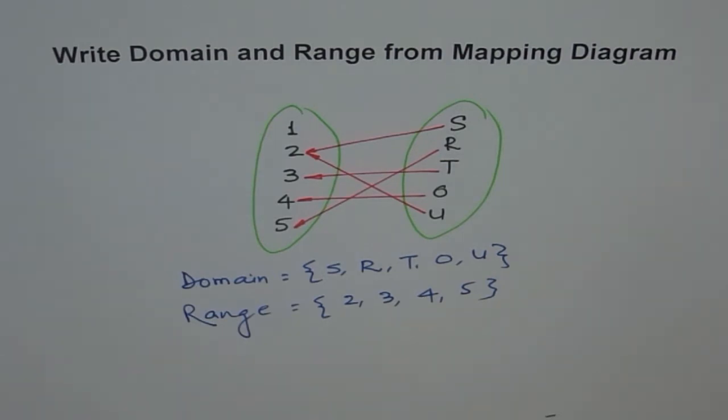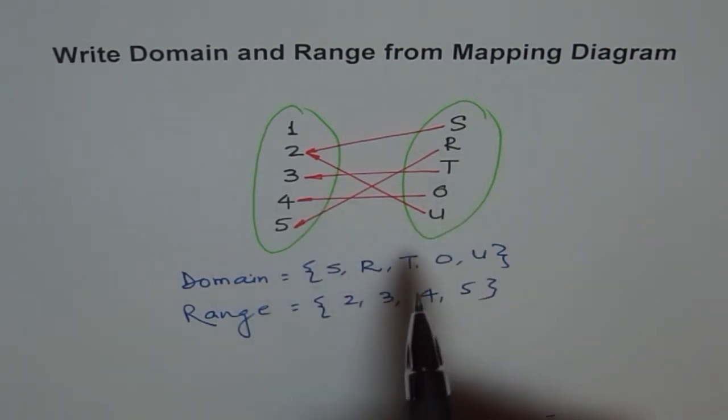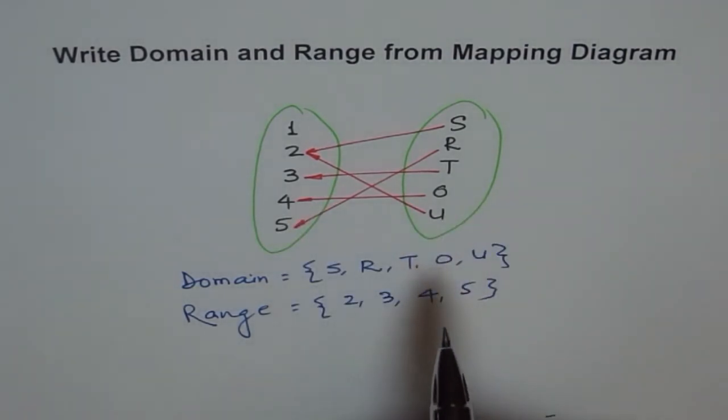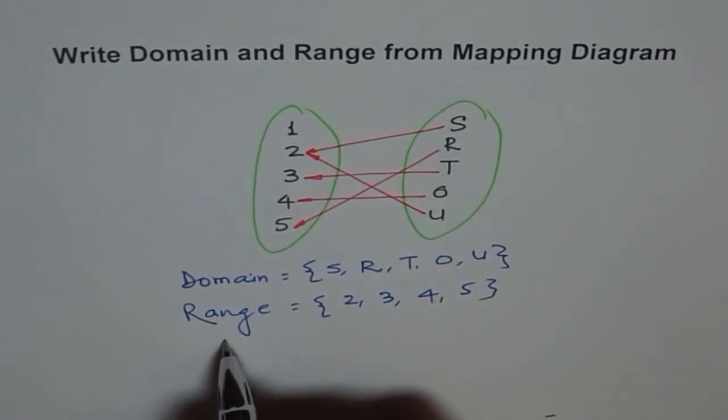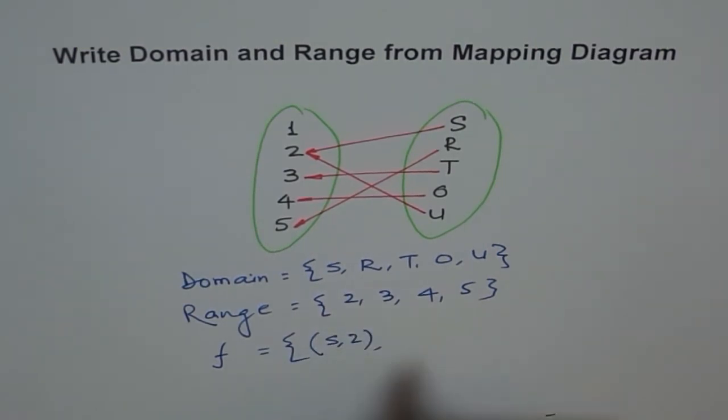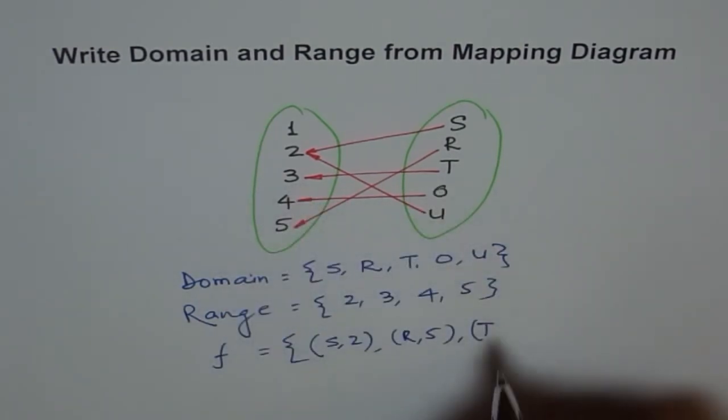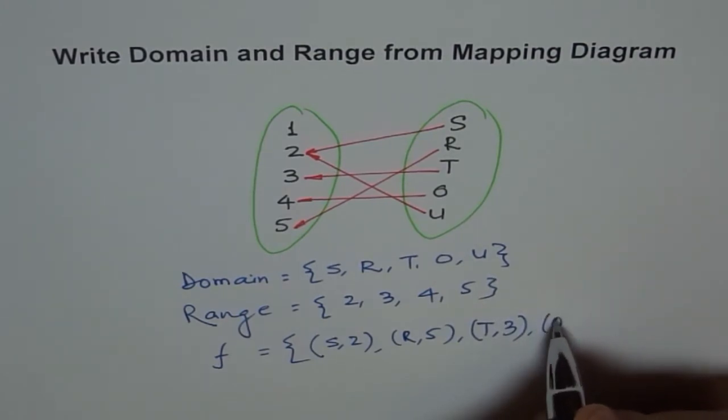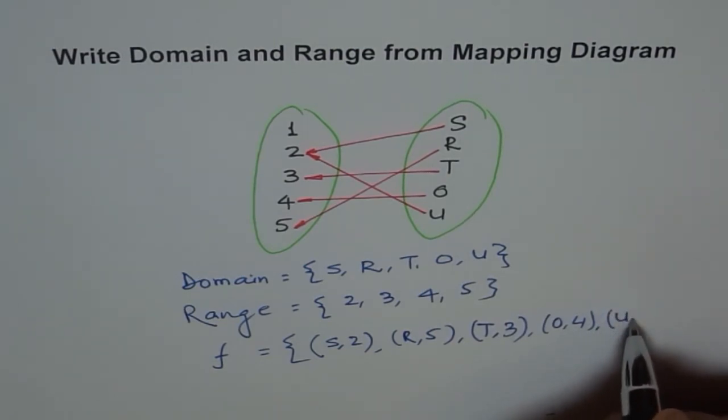So if you have to write set, right, can you write the function? Now you see it's a function, so can you write the set? So the function here will be written like this in the set form: written S corresponds to 2, R corresponds to 5, T corresponds to 3, O corresponds to 4, and U corresponds to 2.